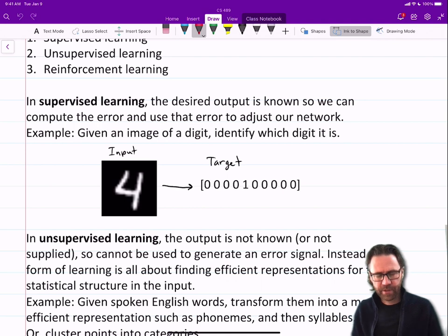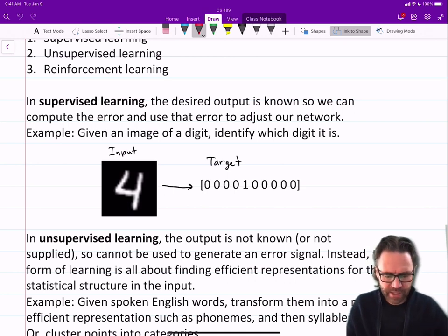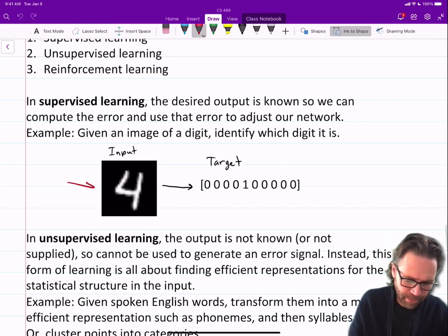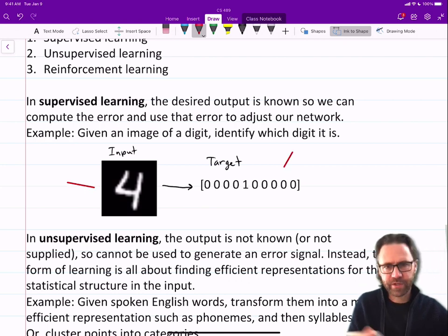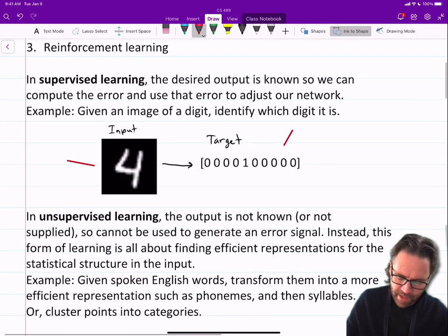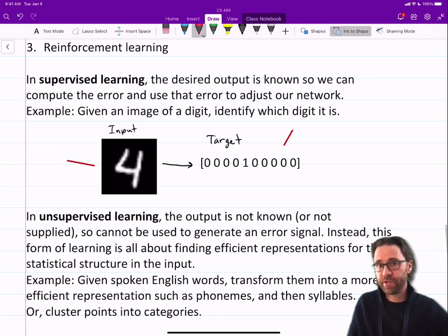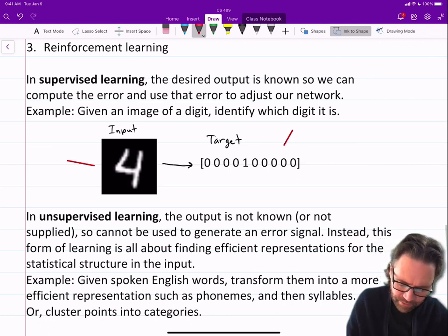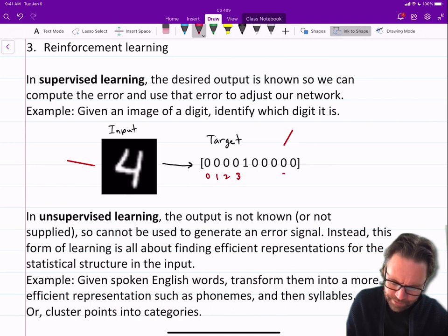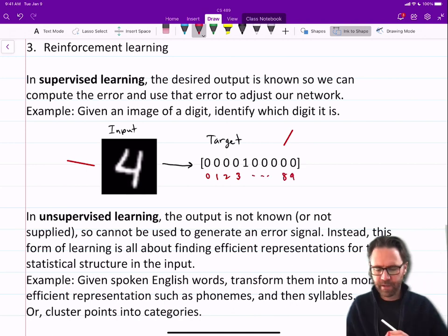So for example, given an input image of a digit—and you'll see this data set come up again, it's the MNIST data set—identify which digit it is. So in this case, we have the input here, and then we have the target over here. So this is a one-hot target, and it's 10 since there are 10 digits, 10 different classes or categories.